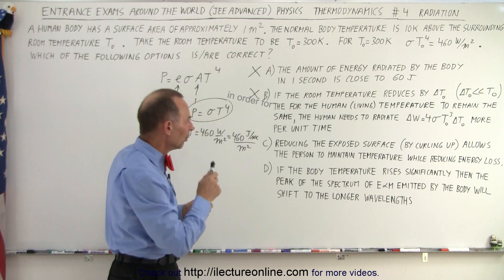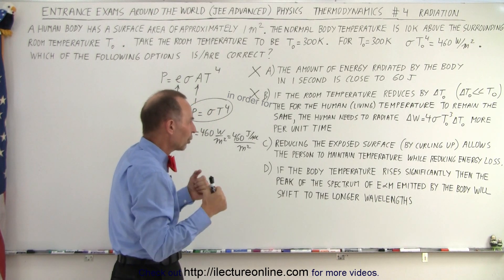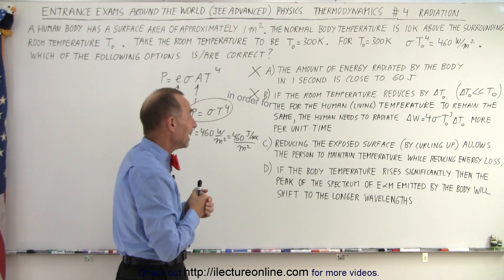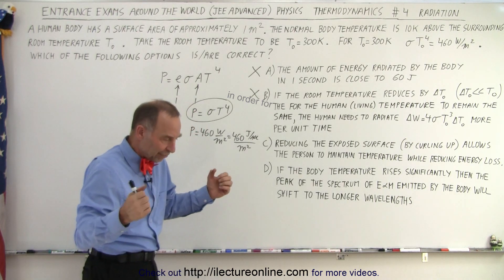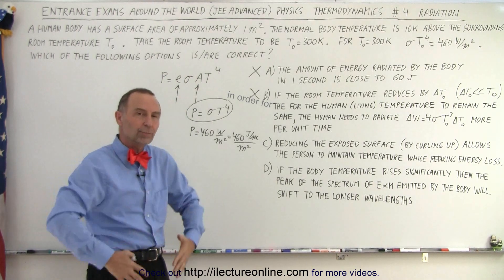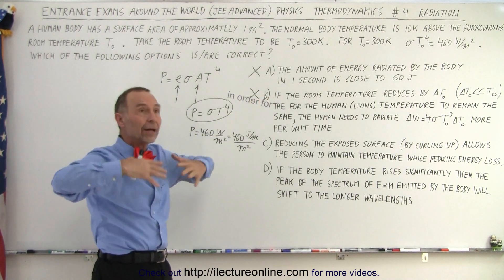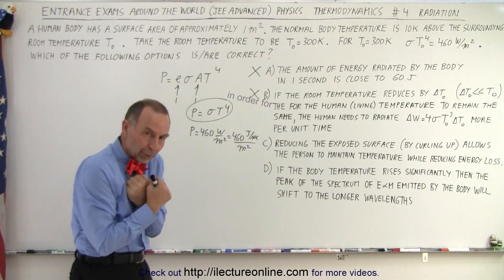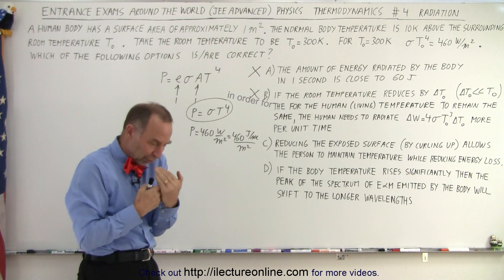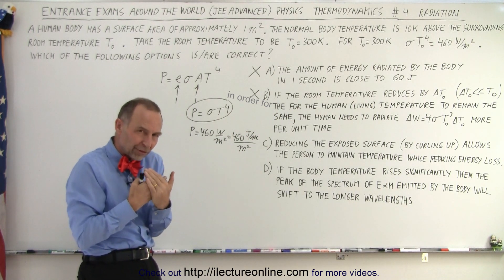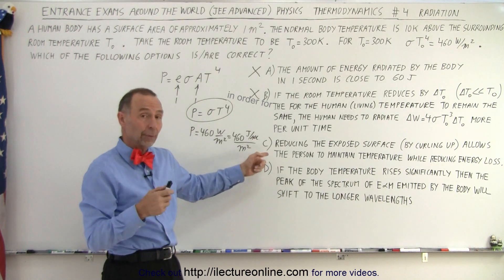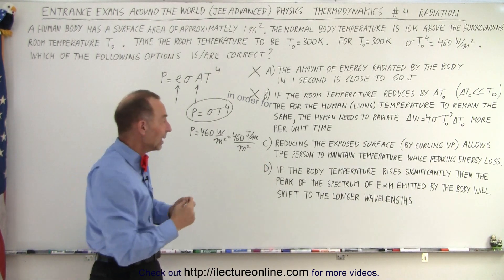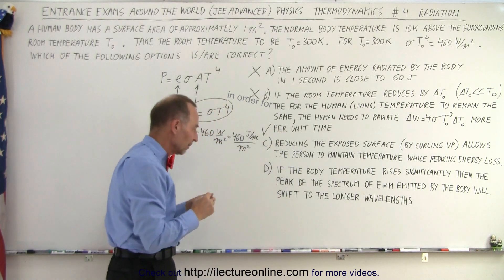How about C? Reducing the exposed surface by curling up allows the person to maintain the temperature while reducing energy loss. And that would be the case. If you curl up, then not all of the exposed part of the body would radiate out into the room. If you curl up, you would cover up some parts of that, so it wouldn't radiate to the room, but to the rest of the body. You'll stay warmer if you curl up. So, this is a correct statement. Curling up will indeed keep you warmer. So, C is indeed a correct statement.